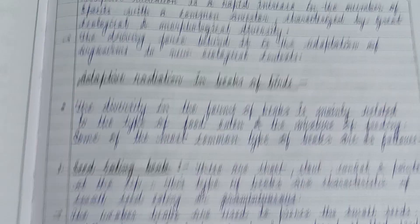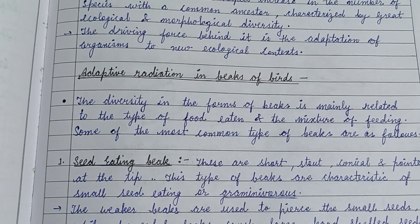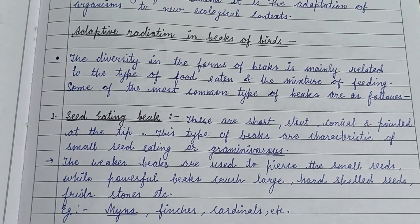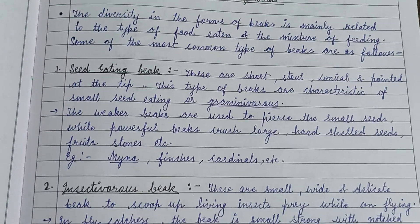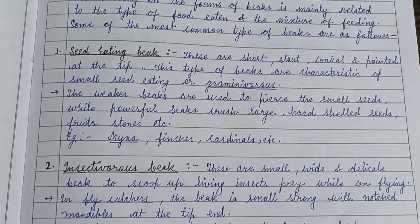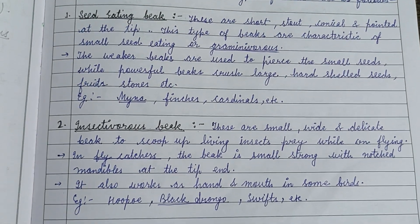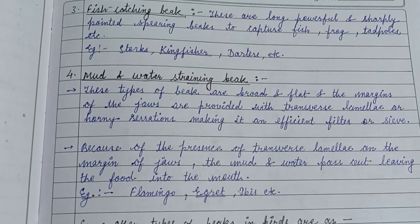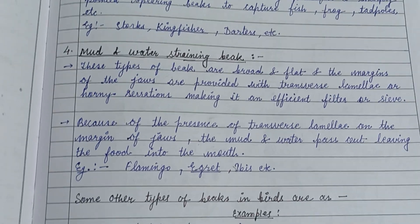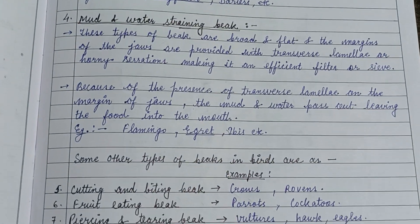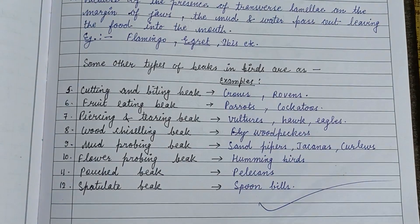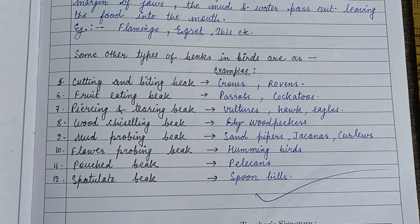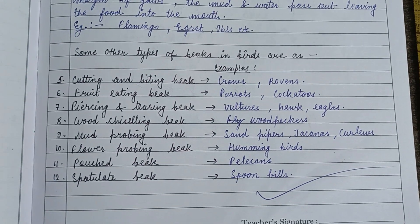There are different types of beaks in birds according to their type of food eaten. Some common types of beaks are: seed eating beak, insectivorous beak, fish catching beak, and mud and water straining beak.